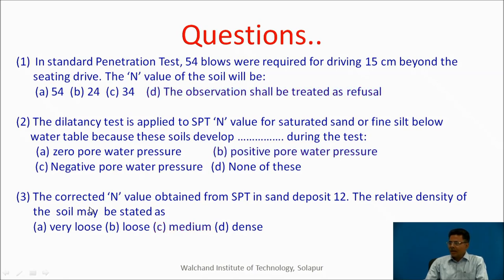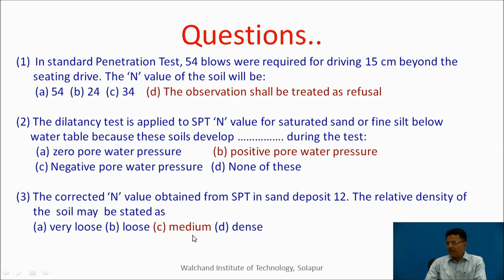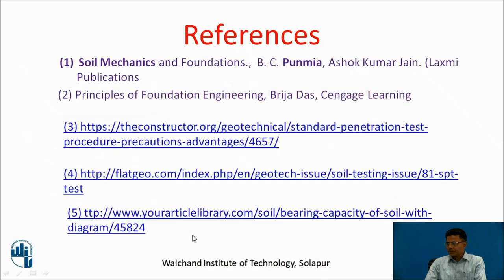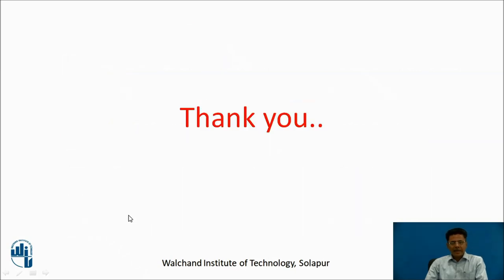Third question: the corrected N value obtained from SPT in a sand deposit is 12. The relative density of the soil may be stated as very loose, loose, medium, or dense. By referring to the graphs, the answer is medium. These are the references used for drafting this presentation. Thank you.